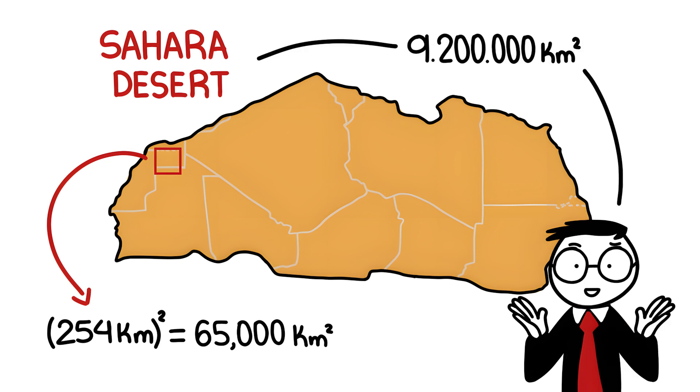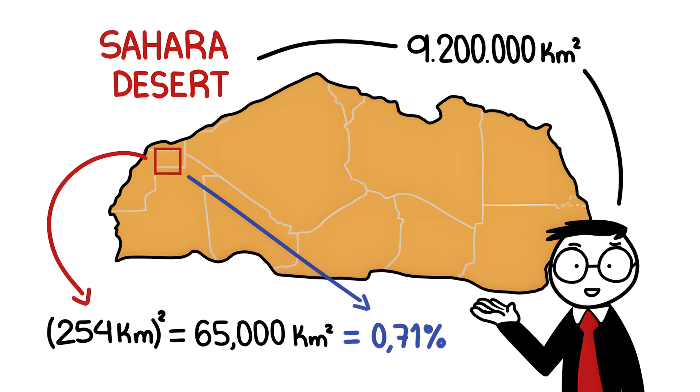Compared to the enormous 9.2 million square kilometers that the Sahara covers, it is actually only a small patch of solar panels in the Sahara that we would need for our energy requirements.